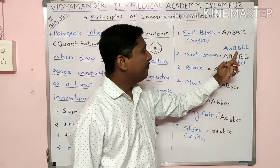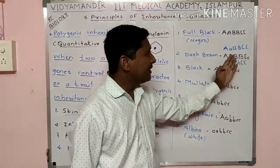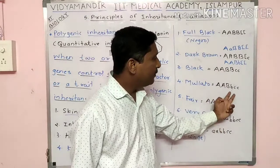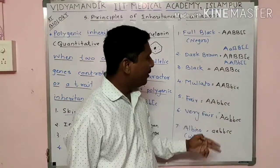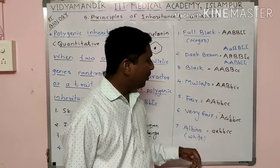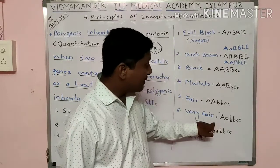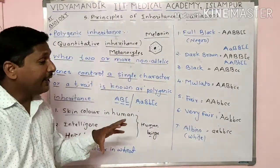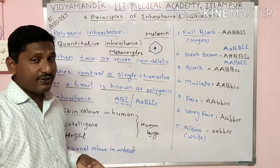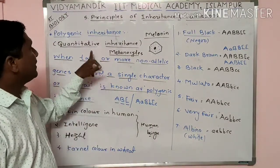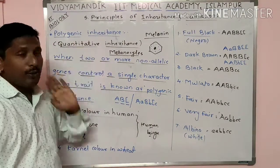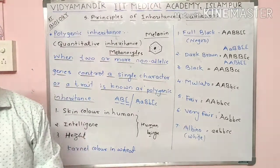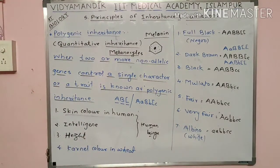The quantity is defined by the number of dominant alleles: six dominant gives darkest, five dominant gives one recessive, four dominant gives two recessive, three dominant gives three recessive, two dominant gives four recessive, one dominant gives five recessive. This is why it is called quantitative inheritance or polygenic inheritance.